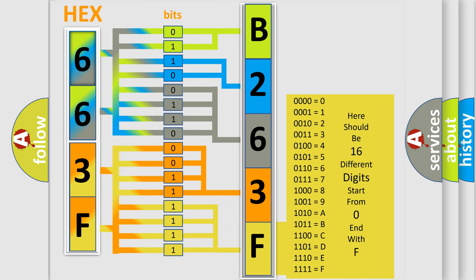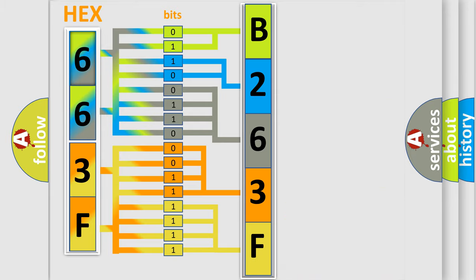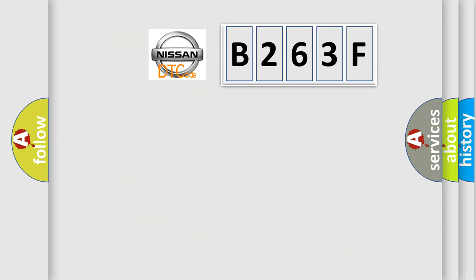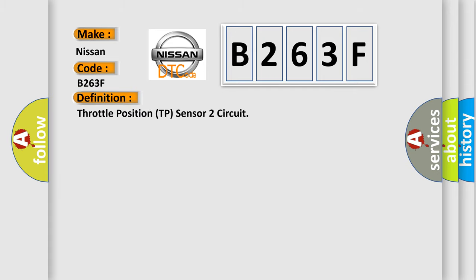We now know in what way the diagnostic tool translates the received information into a more comprehensible format. The number itself does not make sense to us if we cannot assign information about what it actually expresses. So, what does the diagnostic trouble code B263F interpret specifically? For Nissan car manufacturers, the basic definition is: Throttle Position (TP) Sensor 2 Circuit. Here is a short description of this DTC code.